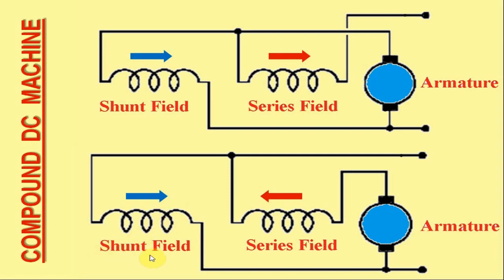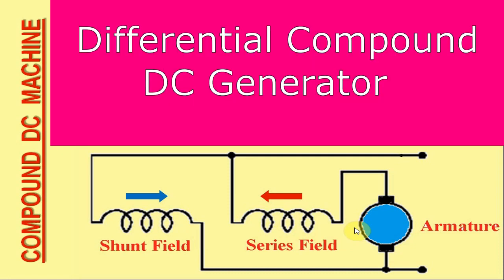On the other hand, in the long shunt compound DC generator, with typical field winding connections as depicted in the second figure, it can easily be observed that the direction of the current in the series field winding is opposite to that in the shunt field winding. Consequently, the series field weakens the shunt field, and therefore such a generator is said to be a differential compound DC generator.